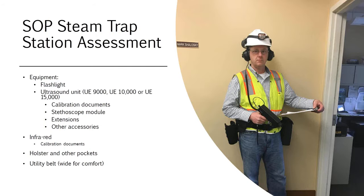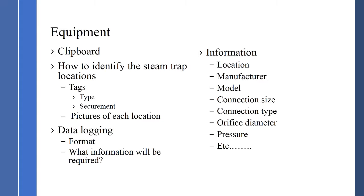Equipment also includes a clipboard and how to identify the steam trap location. When we do assessments, we need to understand how to get repair and replacement personnel back to that location. We're going to tag each trap — certain tags are acceptable, certain tags are not — and we identify what tags will be used and how to secure the tag to the steam trap, typically with a wire or chain method. Pictures of locations are also used today, with a defined numbering sequence and how to file pictures linked to the steam trap identification number.